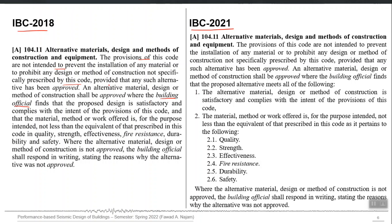The building official will approve that alternate design, and in the 2021 edition they actually specified what they mean by 'approve' or what they mean by 'performance is satisfactory' — they define what satisfactory means. The terms of this provision are modified in 2021, and it says the building official will check that the proposed alternative meets all of the following, thereby defining what they mean by satisfactory.